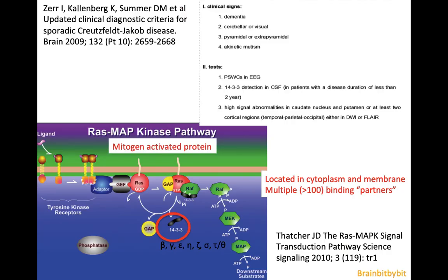To make the diagnosis of Creutzfeldt-Jakob disease you need two out of four clinical signs, and for probable CJD at least one positive diagnostic test, such as an abnormal EEG. You can detect abnormal protein in the CSF, or you have to have an abnormal MRI as just discussed. I want to make a few remarks about the 14-3-3 protein, which plays a part in the pathway we will discuss in more detail when we look at tumors, especially the pilocytic astrocytoma.